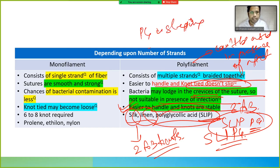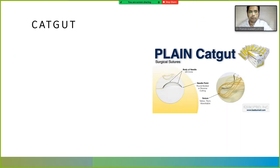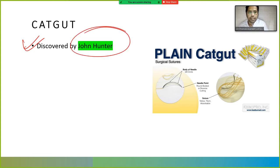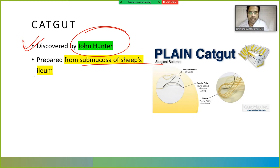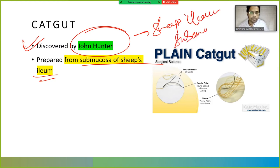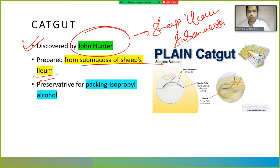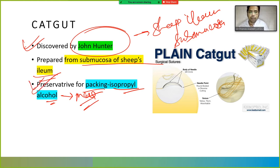Catgut was discovered by John Hunter. It is prepared from the submucosa of the sheep's ileum. The preservative used for packing catgut is isopropyl alcohol — this is an important MCQ point to remember.